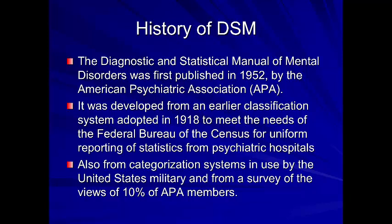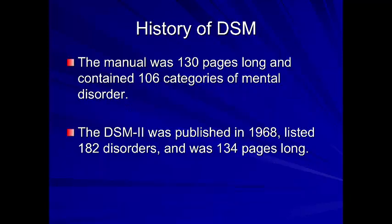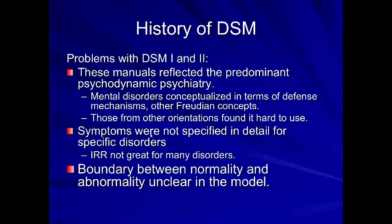Your book is hundreds of pages; the first manual was 130 pages long and contained 106 categories of mental disorder. The DSM-2 was published in 1968 — 14 years later — and had 182 disorders, only slightly longer at 134 pages. The DSM-1 and DSM-2 reflect a more psychodynamic, Freudian view of diagnosis. They defined mental disorders in terms of defense mechanisms and other Freudian concepts. How do you measure a defense mechanism? People who were not psychodynamically oriented found these books hard to use.